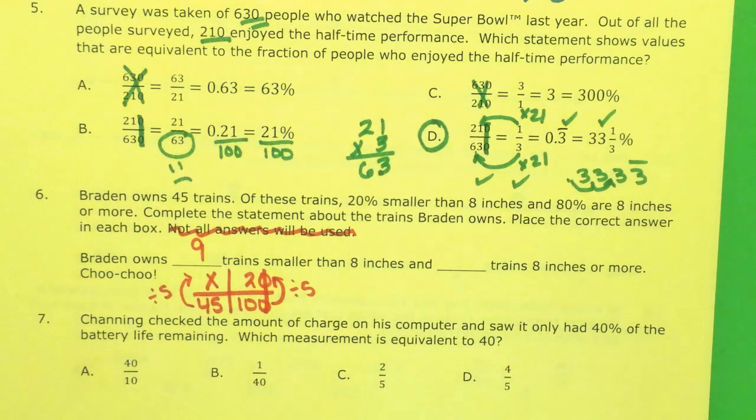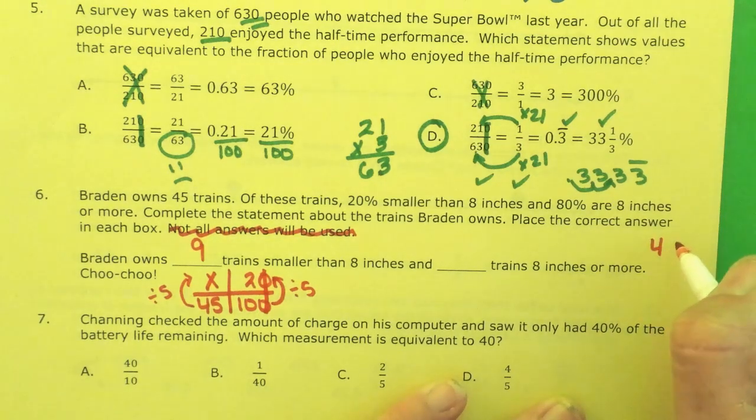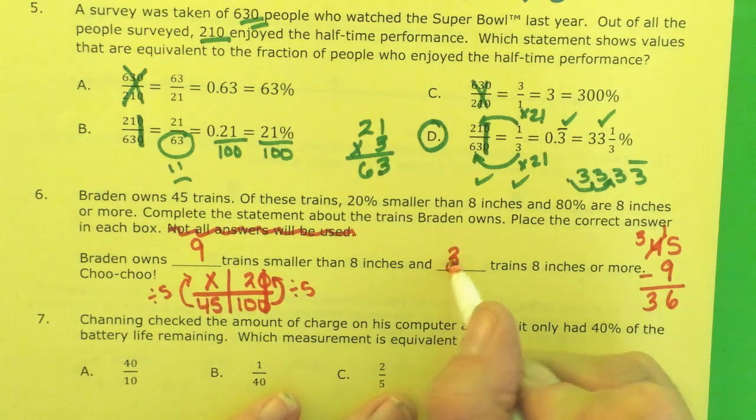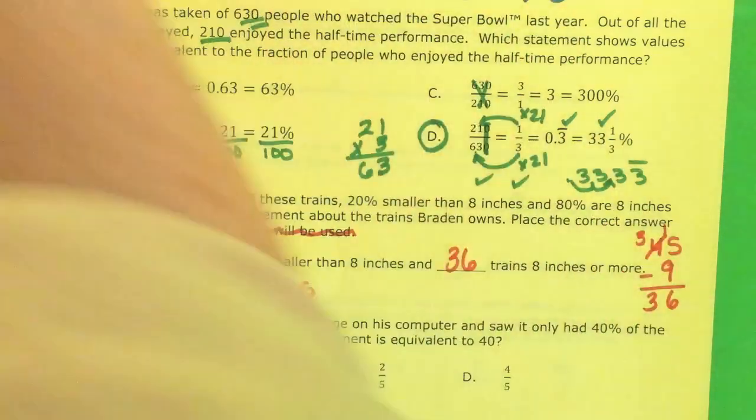That must mean all the rest are more than 8 inches. So if I take 45 total trains minus the tiny trains, borrow from the 4, it becomes a 3, 15 minus 9 is 6, I get 36. So we've got 36 trains that are 8 inches or more.